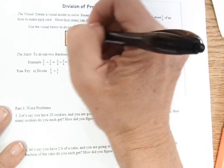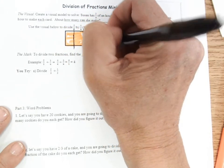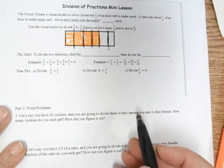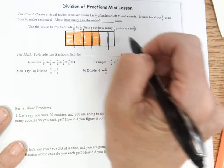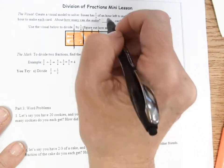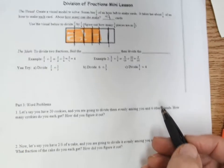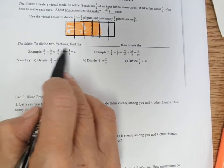So if I divide this bar up into six sections, I have one, two, three, four out of those six sections. So she can make four cards. So you'll recall that to divide two fractions,